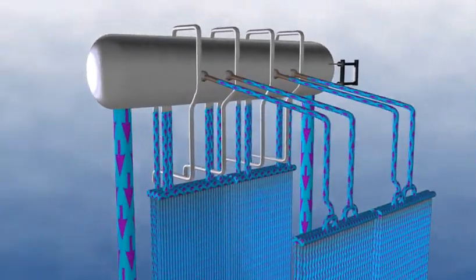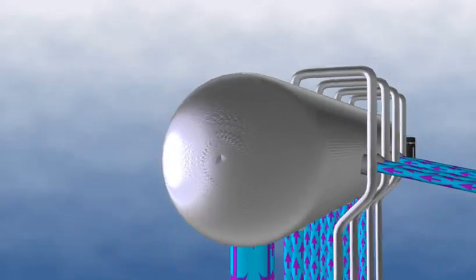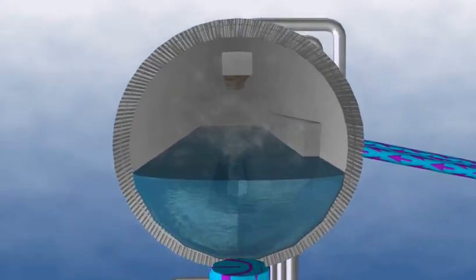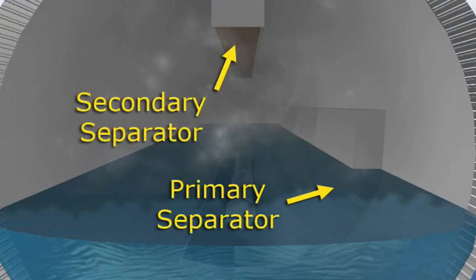The steam separation feature of the HP drum incorporates the same design as the LP and IP drums, which use a primary and secondary steam separator. The water is removed from the steam by these separators.